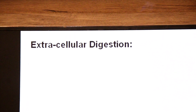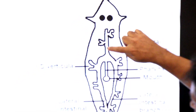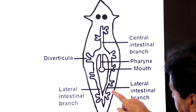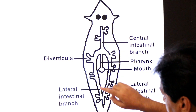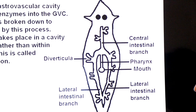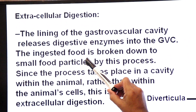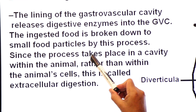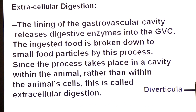Let's first understand extracellular digestion in planaria. You can see the cavity within the central intestinal branch and in the two lateral intestinal branches. Digestion takes place in this cavity — that is extracellular digestion — where the inner lining secretes digestive enzymes. The lining of the gastro-vascular cavity releases digestive enzymes into the cavity, and the ingested food is broken down into smaller food particles. This is called extracellular digestion since the process takes place in the cavity within the animal rather than within the animal's cells.